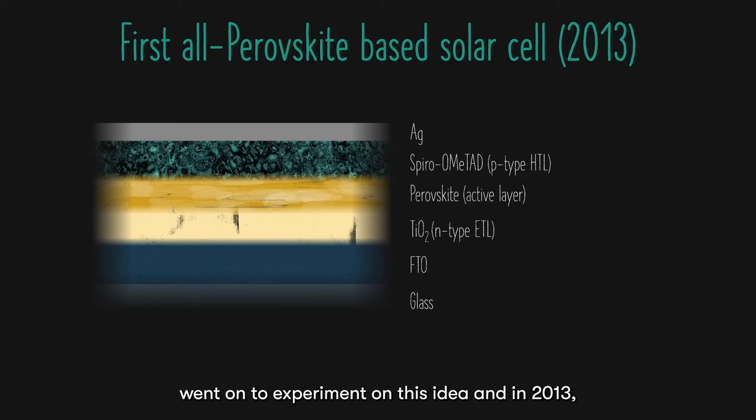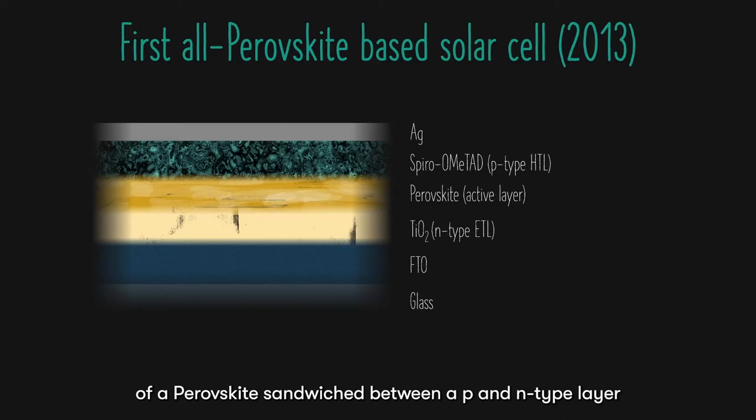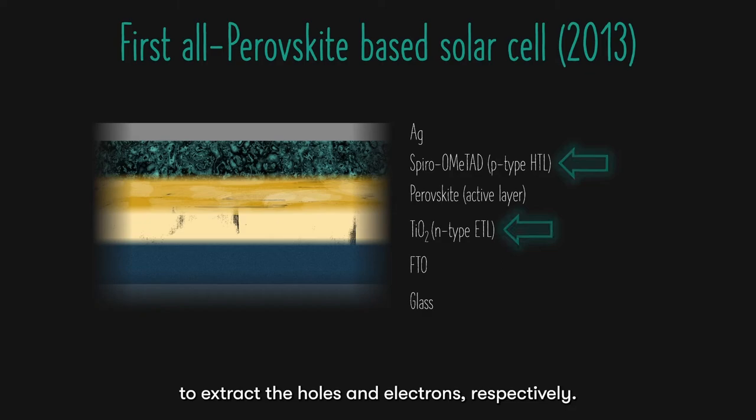Professor Snaith's research group immediately went on to experiment on this idea, and in 2013, the group successfully synthesized the first ever perovskite solar cell. A perovskite solar cell consists of a perovskite sandwiched between a p- and n-type layer to extract the holes and electrons, respectively. This solar cell exhibited a staggering efficiency of 15%.